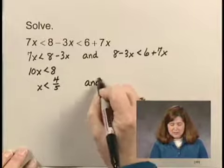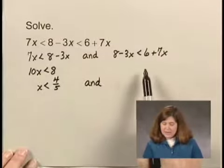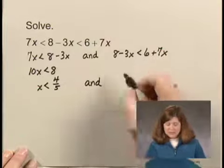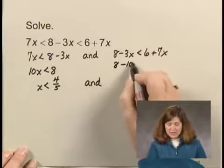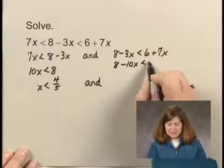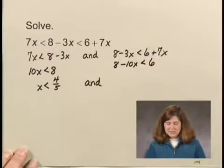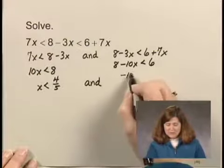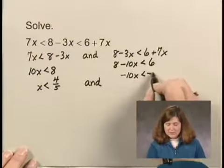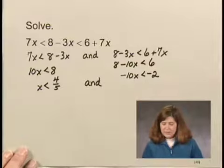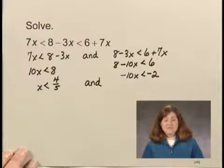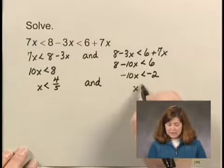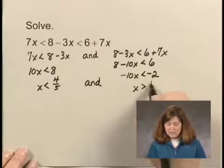And on this side, we subtract 7x from both sides, and we have 8 minus 10x is less than 6. We subtract 8 from both sides, and we get negative 10x is less than negative 2. And we divide both sides by negative 10, and change the direction of the inequality symbol, and we get x is greater than 2 tenths or 1 fifth.